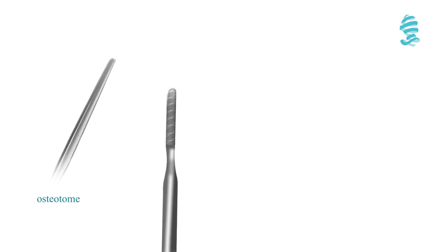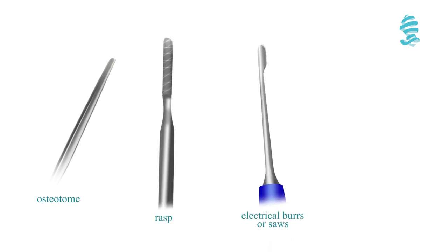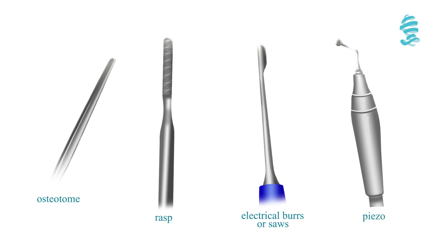The bony hump can be removed using an osteotome, rasp, electrical burrs or saws, or piezo instruments, depending on the situation and the surgeon's preference.